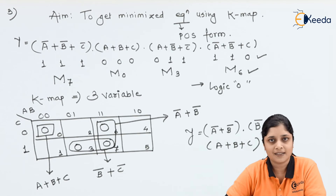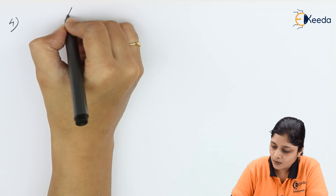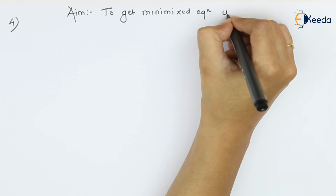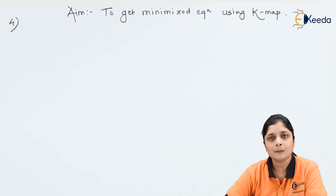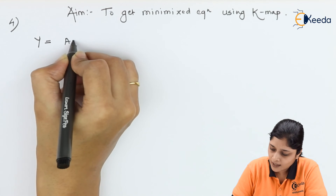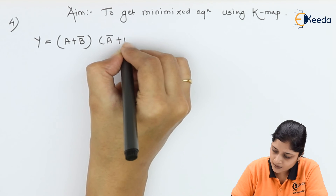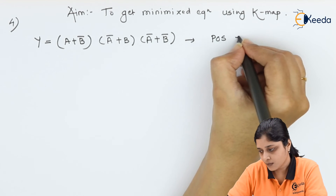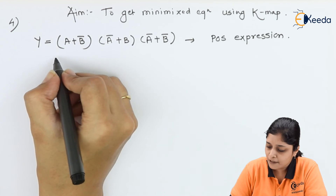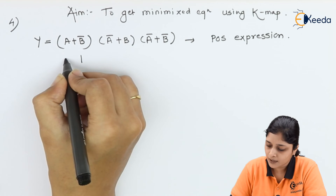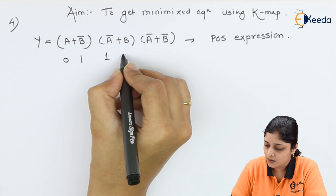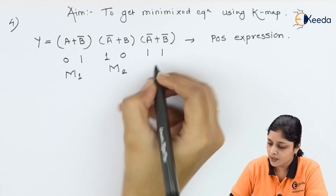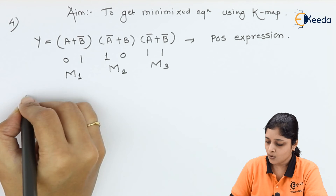Now the fourth example: your aim is to get the minimized equation using K-map. The given equation is Y = (A + B̅) · (A̅ + B) · (A̅ + B̅). It is a POS expression. The next step is calculating the max terms, writing 1 for bar terms and 0 for normal terms.